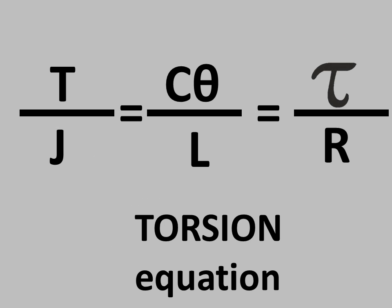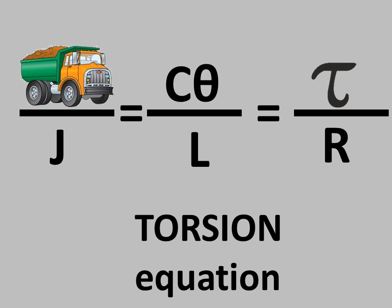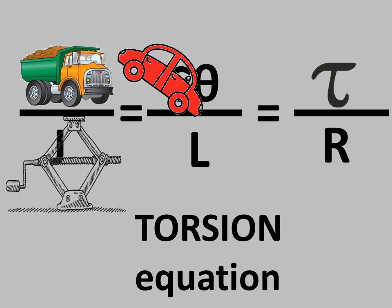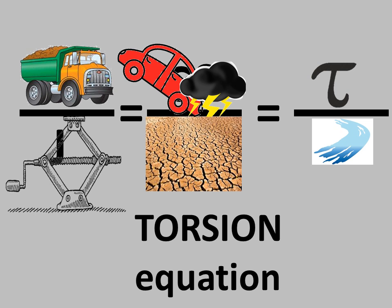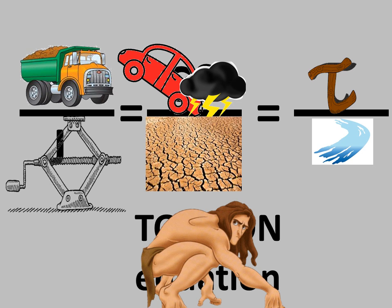Now, in this equation, T becomes truck, J is jack, C becomes car, theta becomes thunder, L is land, R is river and tau becomes tau stick. Torsion becomes Tarzan.